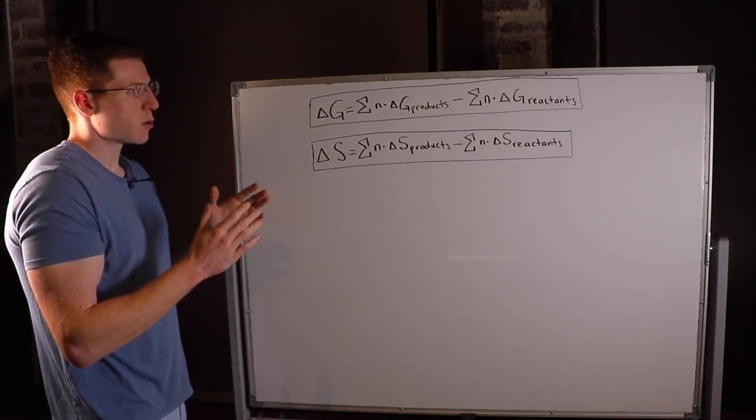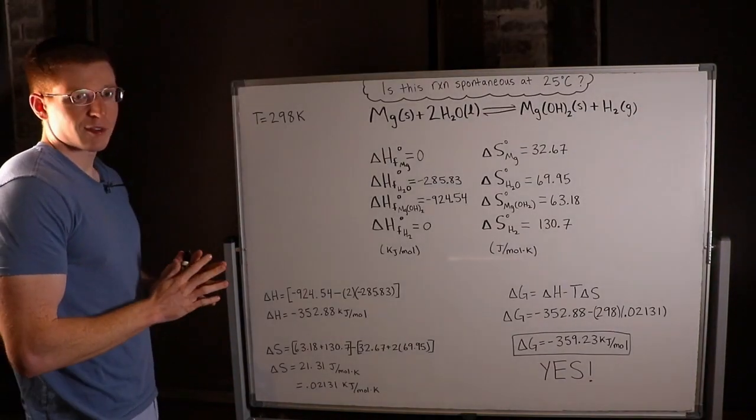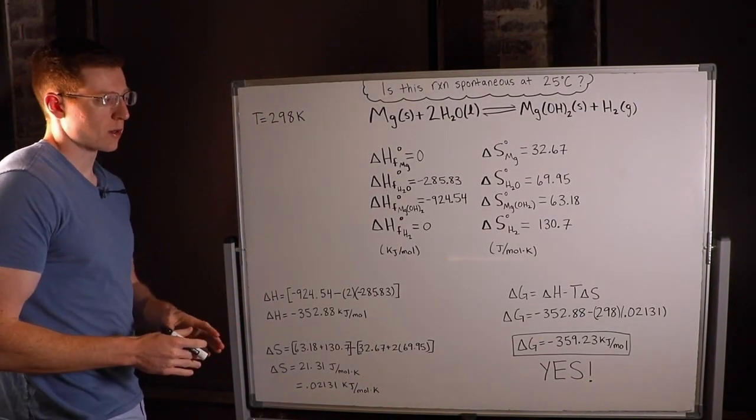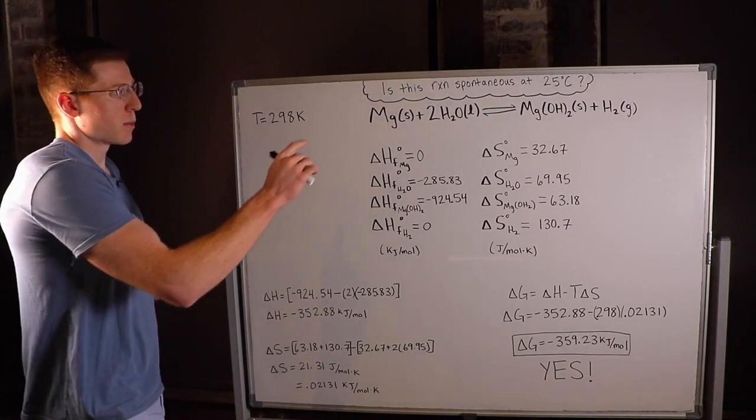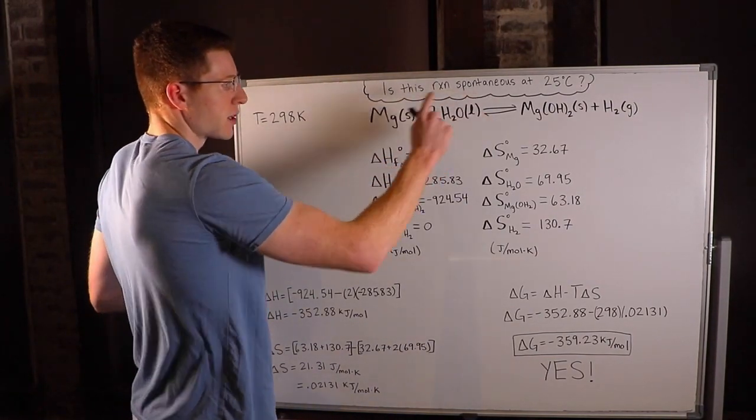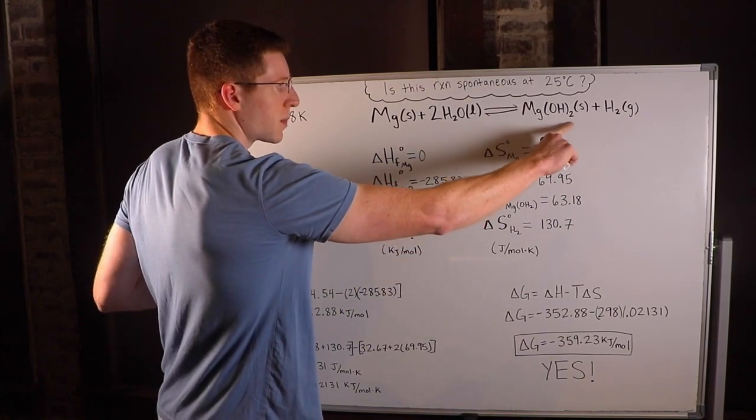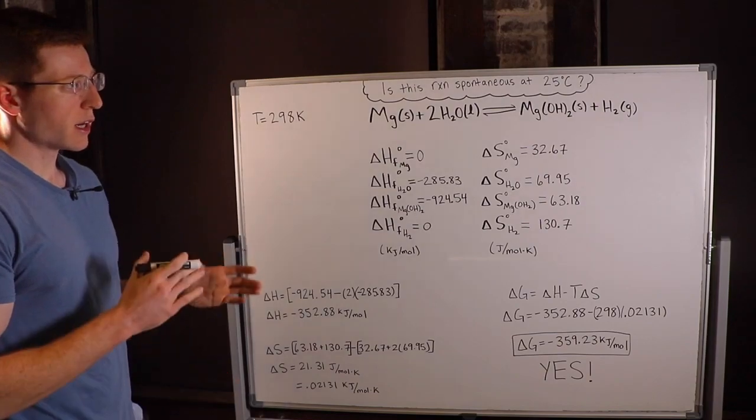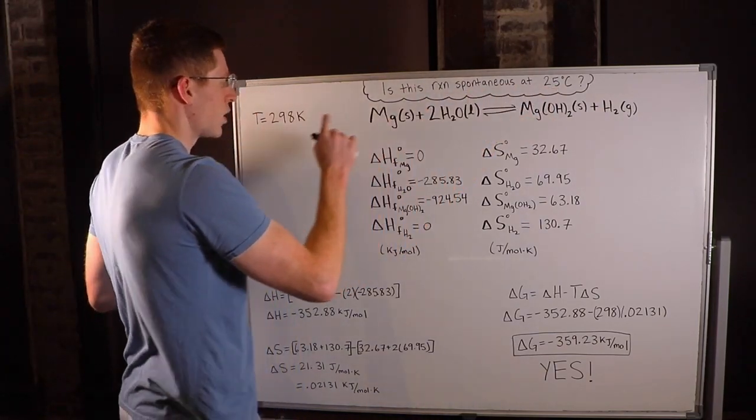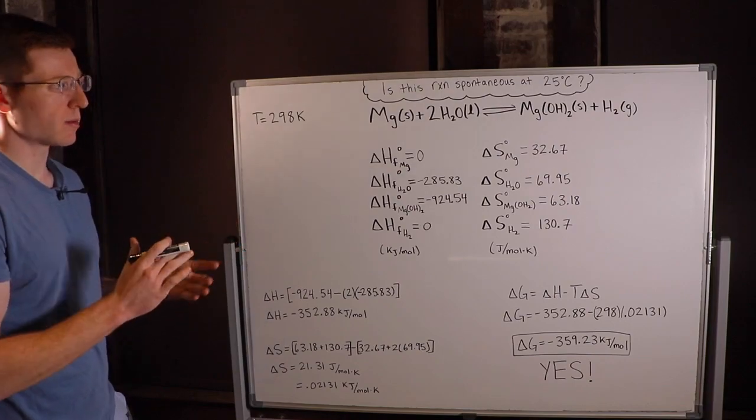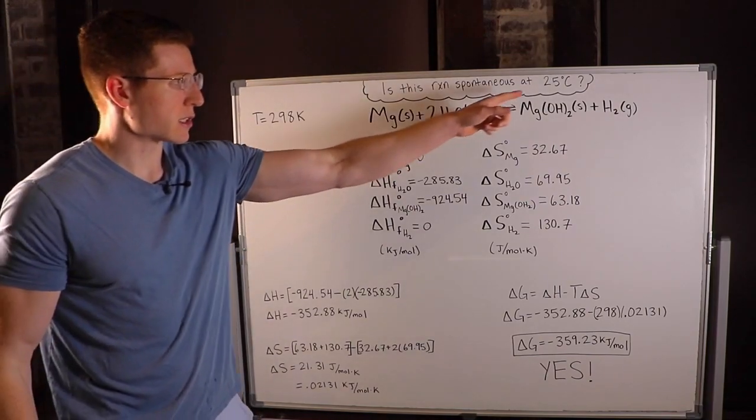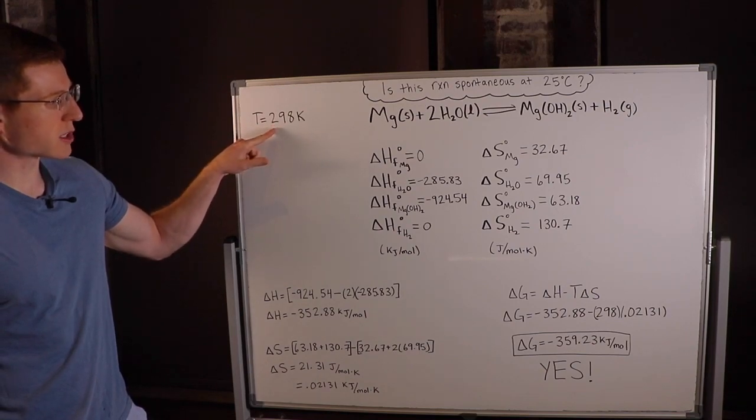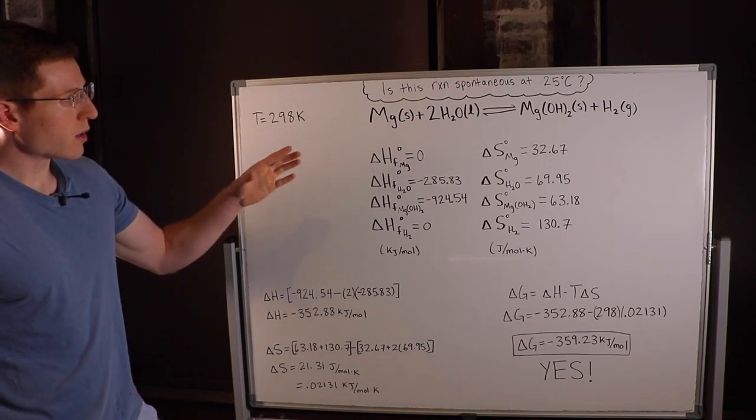Let's use these equations in our problem. I've got an example problem here. The problem asks: is this reaction spontaneous at 25 degrees Celsius? It's a good idea to convert Celsius to Kelvin for thermodynamics problems, so 25 degrees Celsius is approximately 298 Kelvin. We need to determine if this reaction is spontaneous based on the information given.